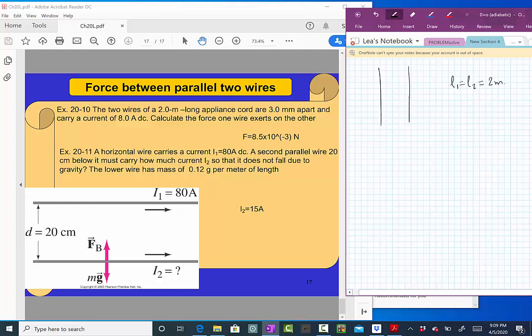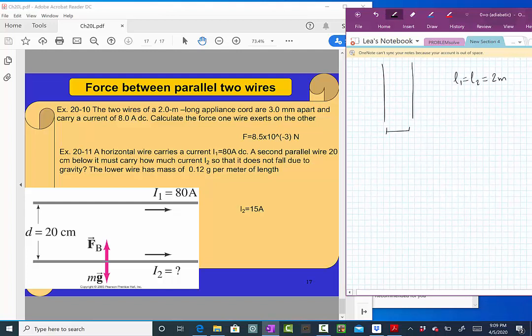The distance between them, so the D between them, this D here, is three millimeters. So three times ten to minus three meters.